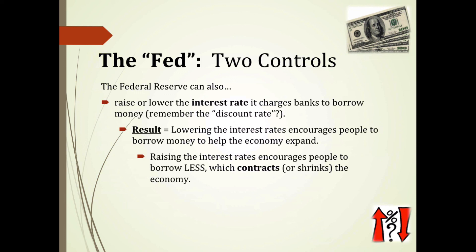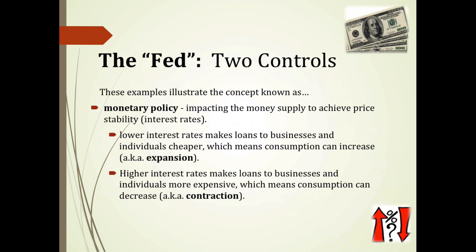The Federal Reserve can also raise or lower the interest rate it charges banks to borrow money — the discount rate. Lowering the discount and interest rates encourages people to borrow more money to help the economy expand. Raising the discount and interest rates encourages people to borrow less, which contracts or shrinks the economy. These examples illustrate monetary policy, which impacts the money supply in order to achieve price stability and control interest rates, enabling either economic expansion or contraction.